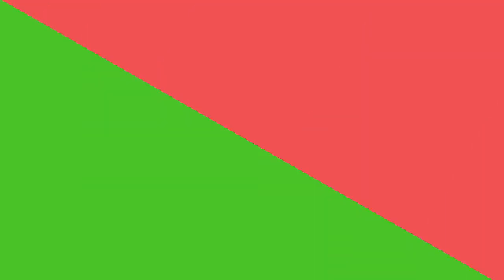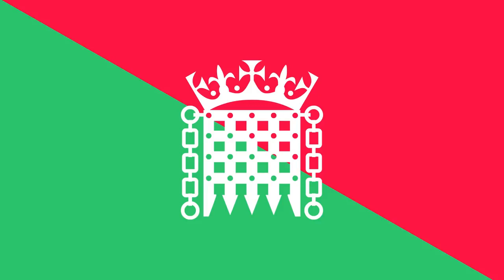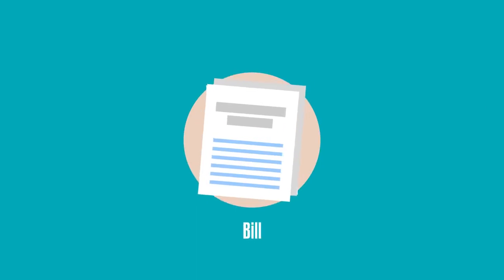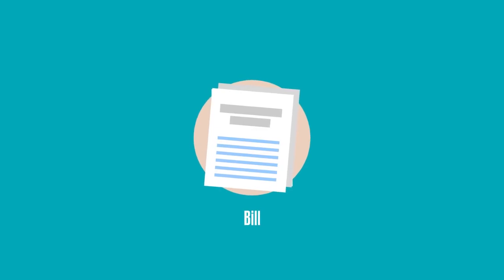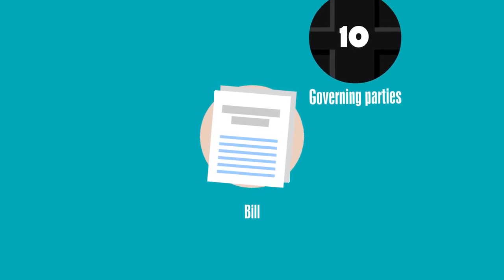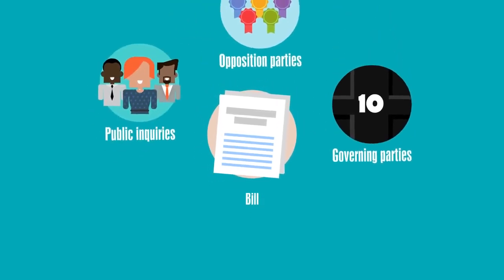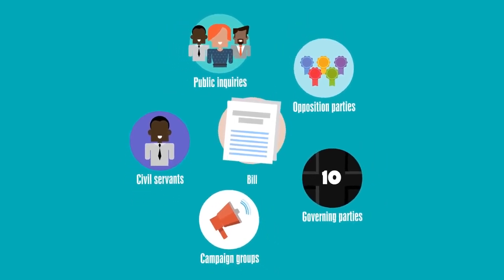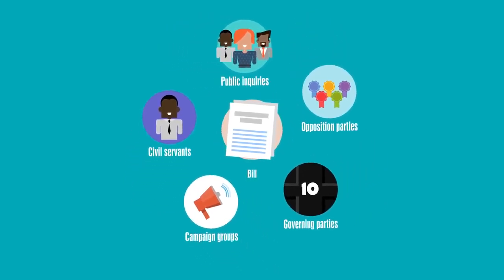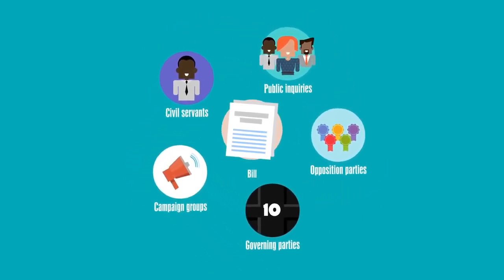Both Houses in Parliament share responsibility for making and shaping laws. But where do laws come from in the first place? A bill is a proposal for a new law, or to change an existing law, and comes from lots of places, like governing and opposition parties, public enquiries, civil servants, or campaign groups.